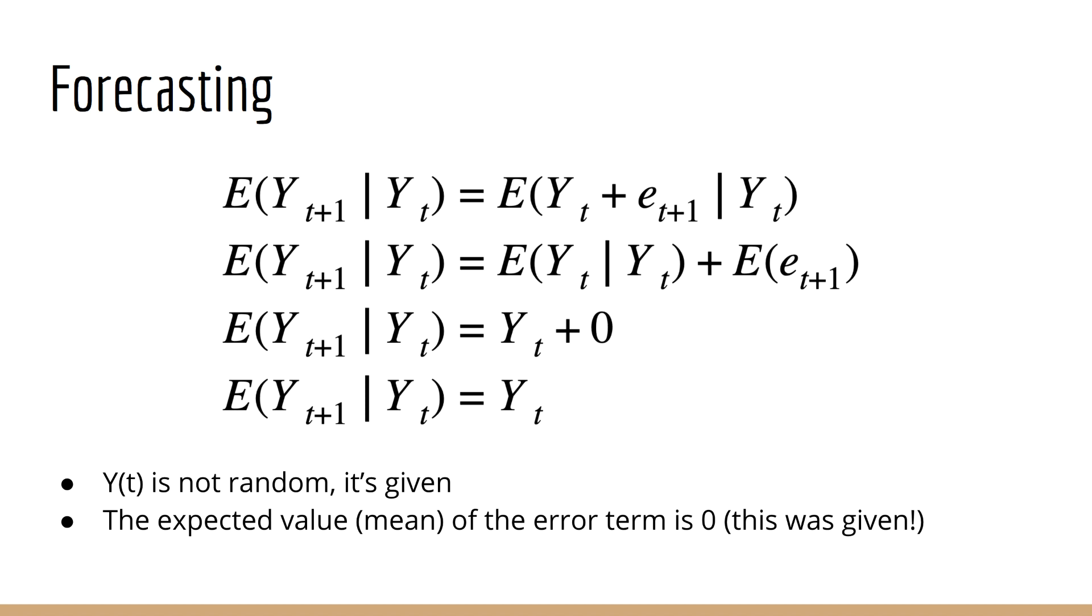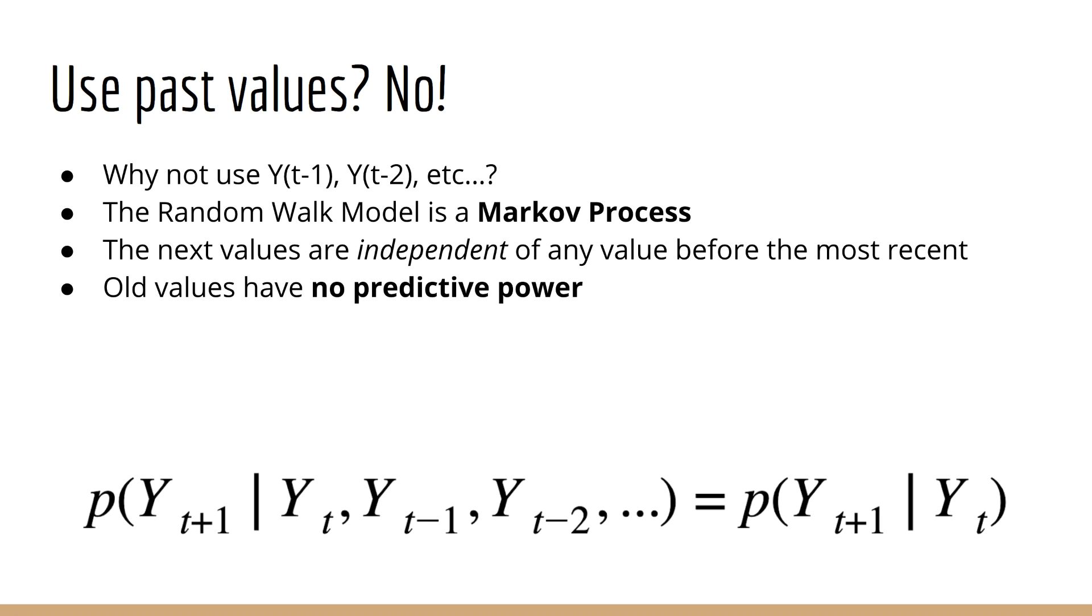In other words, the best prediction we can make in a random walk model is simply the previous value. By the way, you might ask: won't I get a better prediction if I use past values as well? Why not use Y(t-1), Y(t-2) and so on? In fact, it doesn't matter. A random walk model is a Markov process, meaning that we already do have those values, but the next values are independent of those previous values. In other words, they have no predictive power.